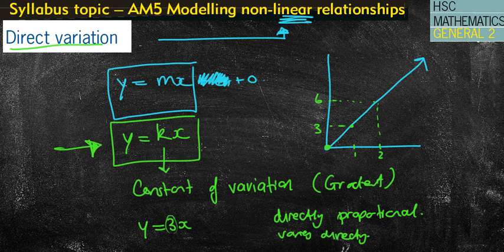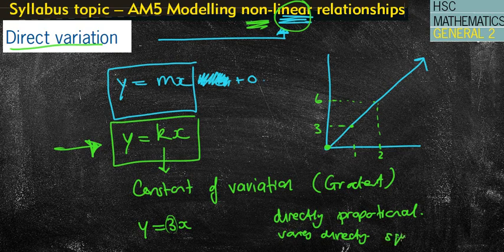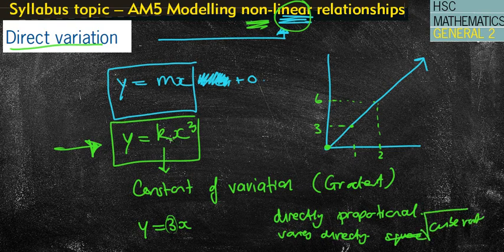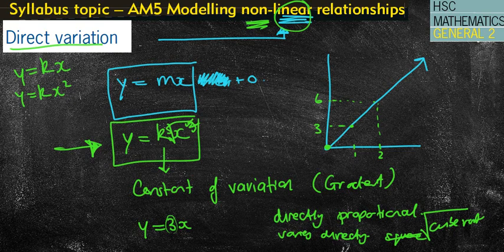Now it's not always simply 'directly proportional to,' which means a linear graph. We also have non-linear styles — you might vary directly with the square of something, which means y equals kx squared; it might be the cube, so y equals kx cubed; or it might be the square root or cube root of x. There can certainly be different ones. y equals kx is our first and foremost, but we can have the square of x, the cube of x, or the square root or cube root of x. Each time you've got k times whatever you've got.